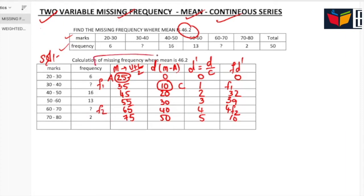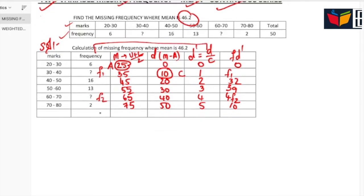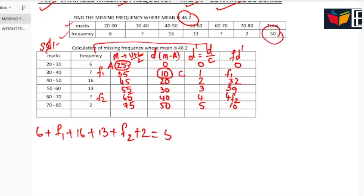So our formula is: first add all this frequency. 6 plus F1 plus 16 plus 13 plus F2 plus 2 equal to - it's already given in the question - 50. So write it down 50.